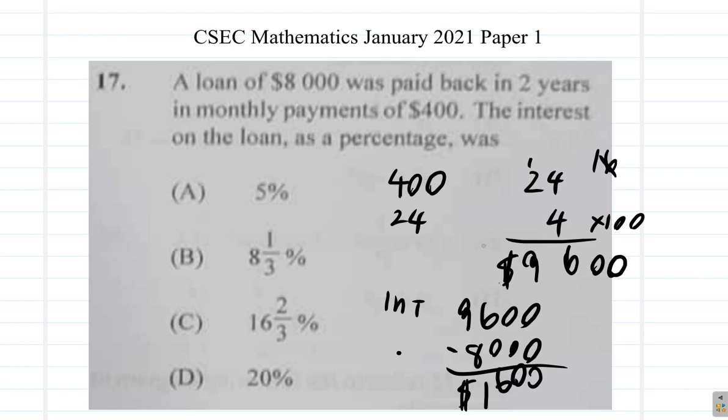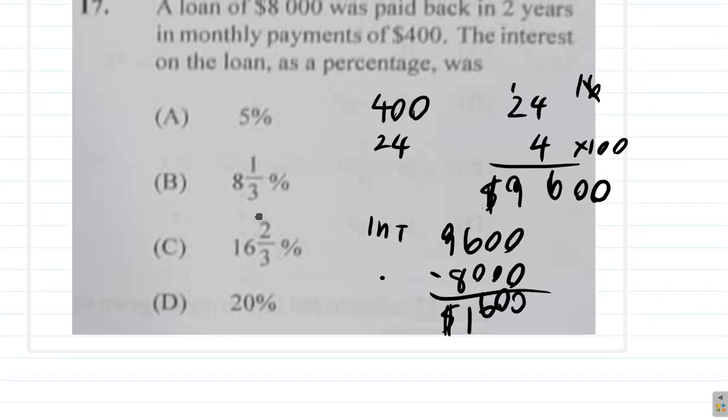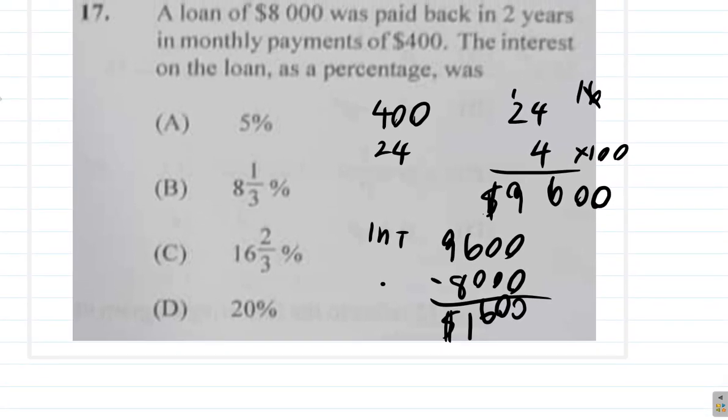But they want the interest on the loan as a percentage. So they took out a loan of $8,000, but instead of paying back the $8,000, they pay $1,600 more. So the interest is 1,600 divided by 8,000 times 100.